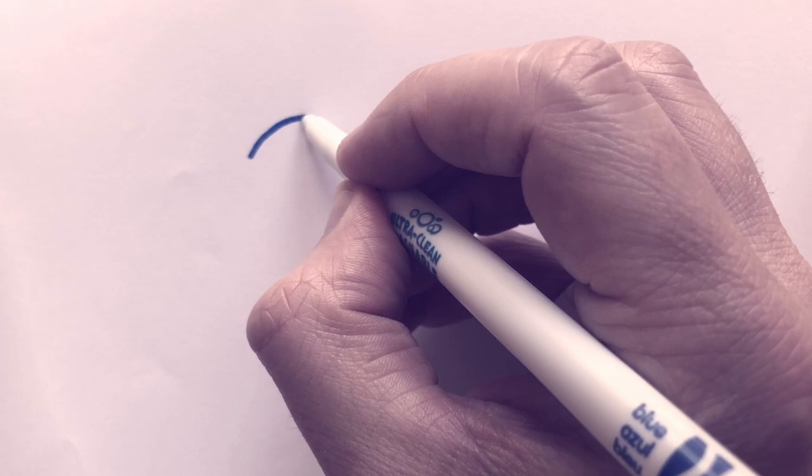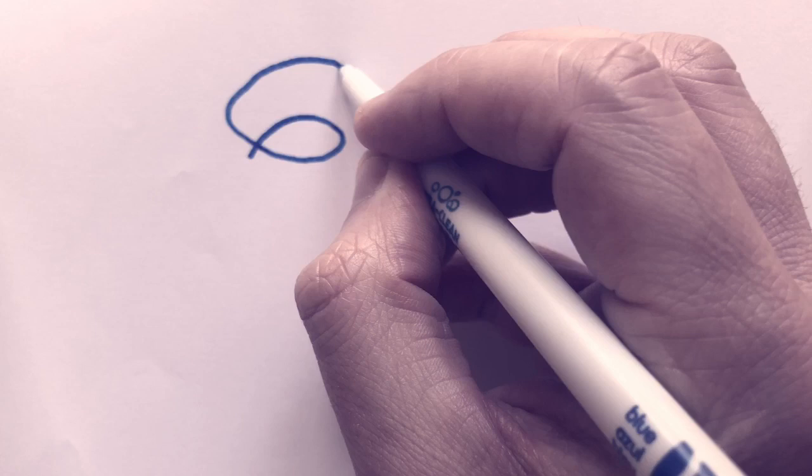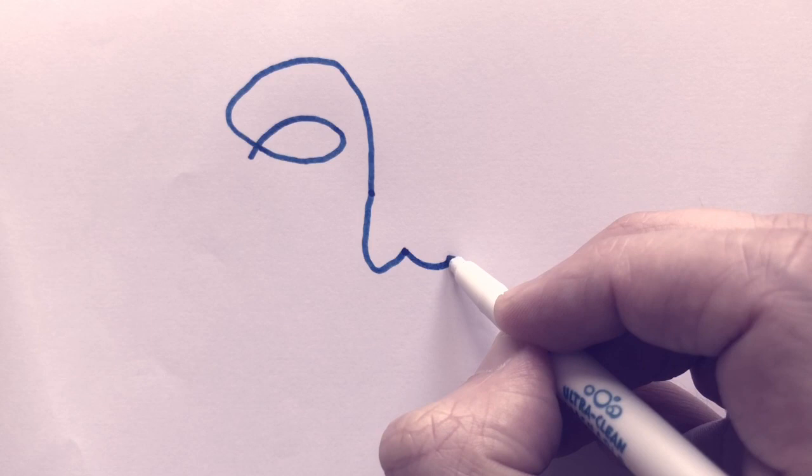I'm going to start with my eye. Nice and slow. I have no idea what that looks like. But I can imagine it in my brain. Here's my nose. Try to come back up to my other eye.